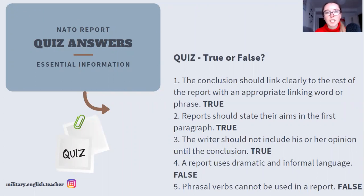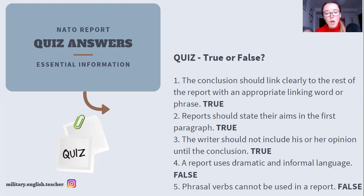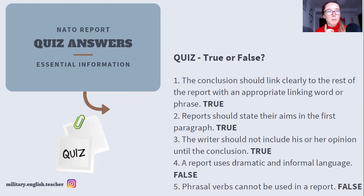Here are the answers to the quiz. Number one is true. Number two is true. Number three is true — but only if you're asked to include your opinion; if you are, wait until the end, guide the reader through all the data and surveys, then add your comment. Number four is obviously false. Number five is false — because we cannot say we cannot use phrasal verbs in reports; there are some that can be used, so that's an extreme statement. And the answer to the passive voice counting task: there were four examples of passive voice in the text.